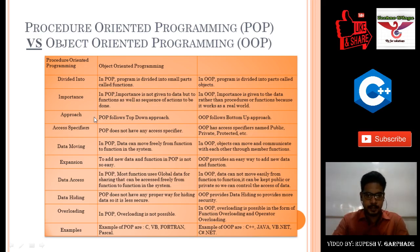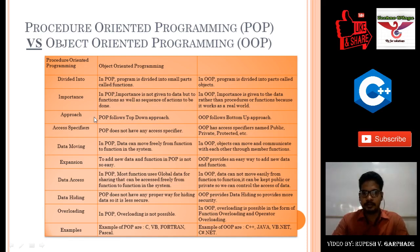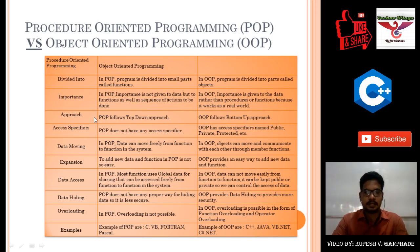Regarding data movement: in procedure oriented programming, data can move freely from function to function in the system. In object oriented programming, objects can move and communicate with each other for performing actions.